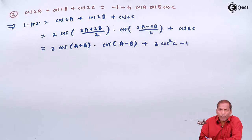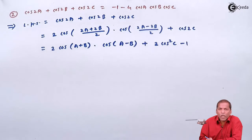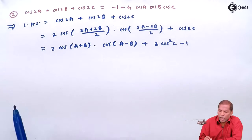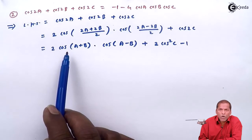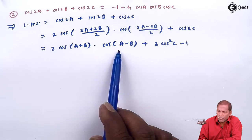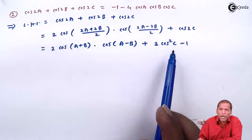The next step: we write the last term -1 first, giving us -1. Then for cos(a+b) we apply the formula — that is equal to -cos(c). So we get: -1 + 2·(-cos(c))·cos(a-b) + 2cos²(c).